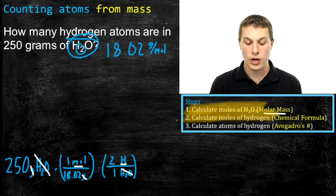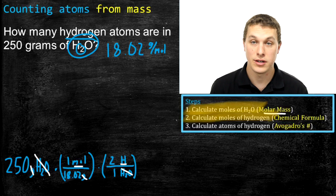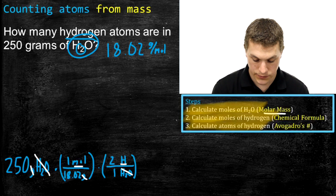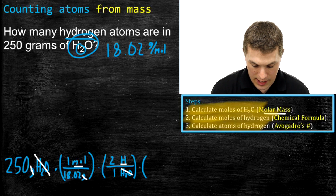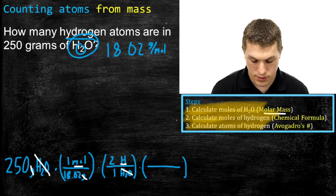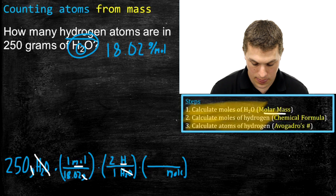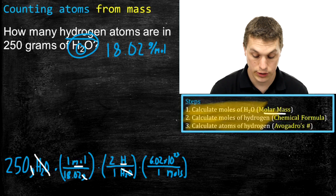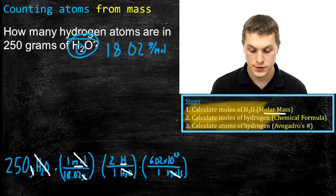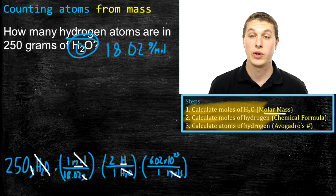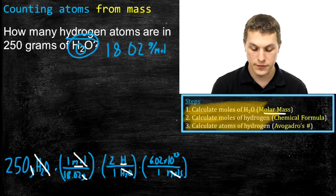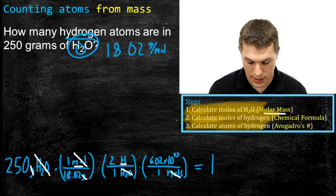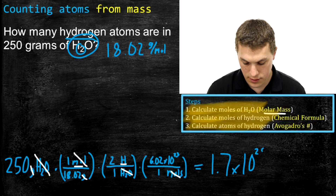The last step is going from moles of hydrogen to atoms of hydrogen using Avogadro's number, which takes us between moles and number of atoms. Moles go on the bottom, and we have 6.02 × 10²³ atoms in one mole on top. That cancels our moles and leaves us with atoms of hydrogen. Plugging all conversion factors into the calculator gives 1.7 × 10²⁵ hydrogen atoms.